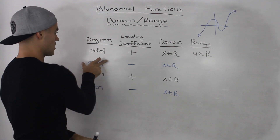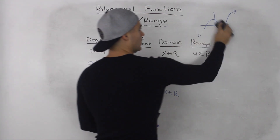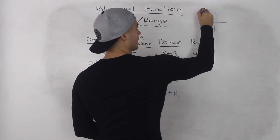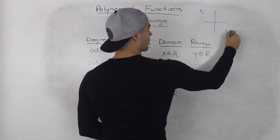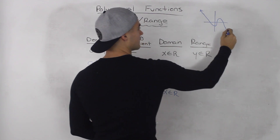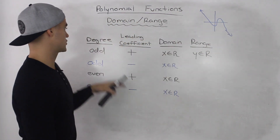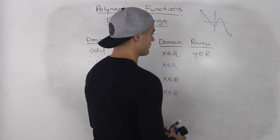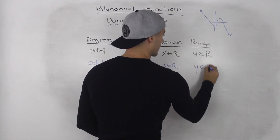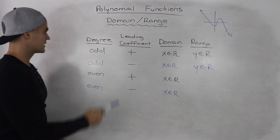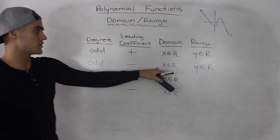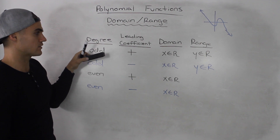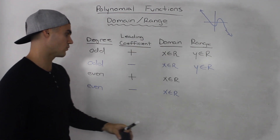What if the degree is odd and the leading coefficient is negative? The end behavior starts in quadrant 2 and ends in quadrant 4. Notice there are no restrictions on the y values either — y can be anything. In fact, any odd degree polynomial will always have a domain of x is an element of real numbers and a range of y is an element of real numbers, no matter what the leading coefficient is.